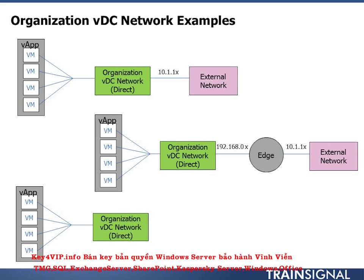These graphics came from the VCAT from VMware to help explain visually what we're talking about. The topmost graphic is a direct connected org VDC network — an external direct network. Working left to right, the virtual machines within the vApp can talk to the org VDC network, which then directly communicates with the external network. There's no router, no NATting — just a direct connection straight from the org network to the external network. That also means the IP structure of the external network must be used by the vApps as well.